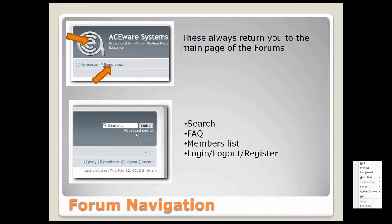You've also got some tools up in the top right. The search box allows you to search for keywords or specific text in any of the categories, topics, posts, or replies. You can also use the advanced search to narrow down — for example, if you only want to search for stuff in the Student Manager category, you can specify that using the advanced search.